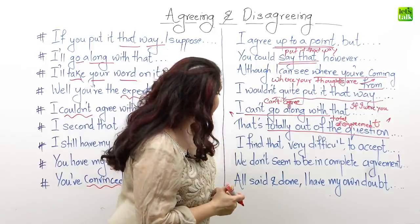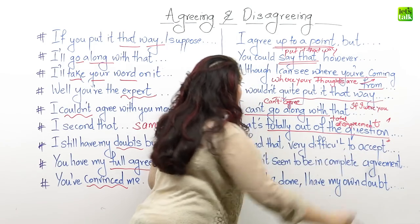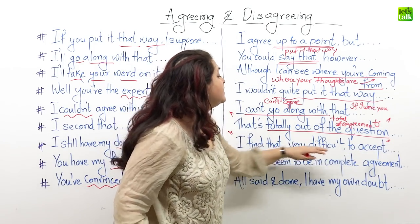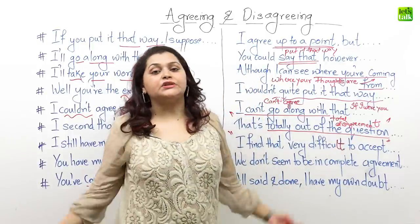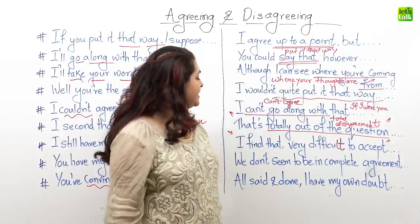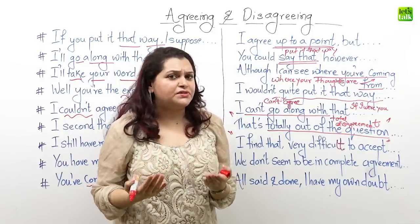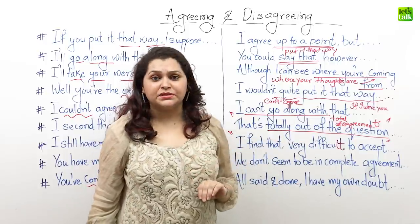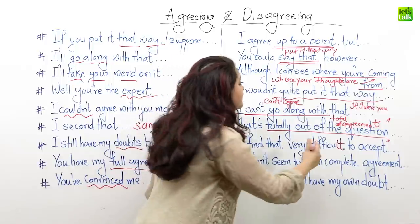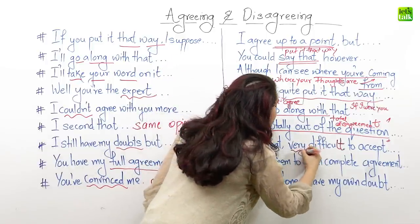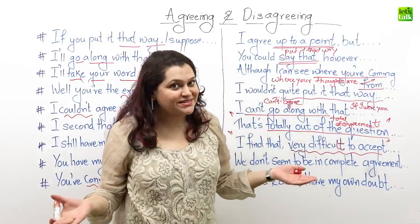Moving on, now this one is quite diplomatic. Here Sally says 'I find that very difficult to accept.' She's not directly telling Dan 'I disagree with you.' She's kind of saying she finds his opinions or arguments very difficult to accept, which is basically that she disagrees with him. This is actually a very diplomatic and interesting way to disagree with somebody, and you can use this at work, just the way Sally is using it with Dan.